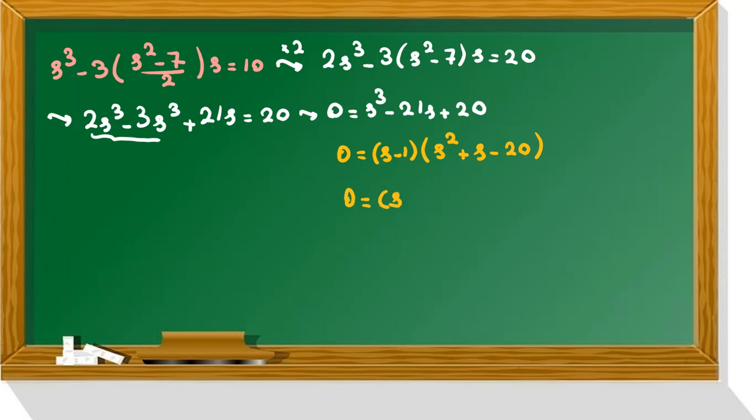And we can factorize again. Here it's s plus 5, s minus 4, equal to 0. Now let's see all answers for s: 1, negative 5, 4.